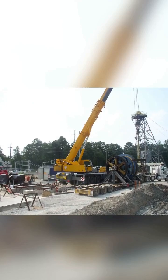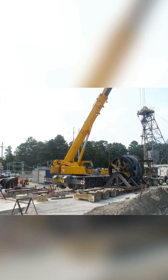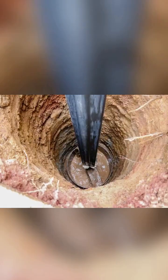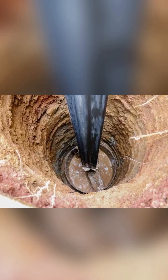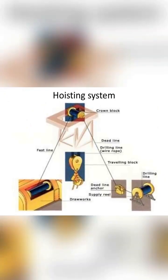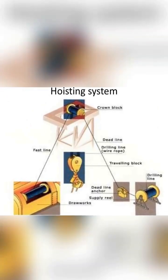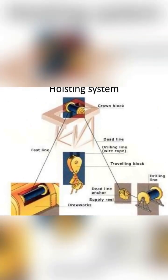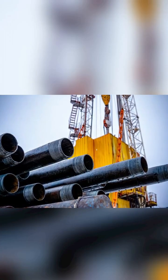The hoisting system in a drilling rig is used to raise and lower the drill string and other equipment in and out of the borehole. The hoisting system is also crucial for retrieving the drill string when changing drill bits, adding more drill pipe as the hole gets deeper, or when pulling out the string at the end of the drilling operation.